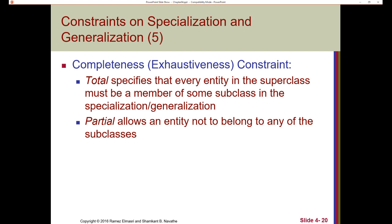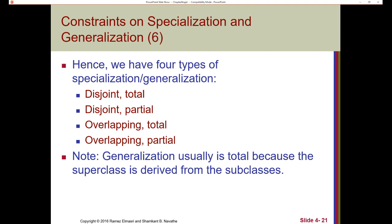Total specifies that every entity in the superclass must be a member of some subclass in the specialization or generalization — each employee has got to also be a member of some subclass: a technician, a secretary, or an engineer. If that's not the case, then we call it partial — an entity might just be an employee in general and doesn't have to necessarily belong to any of the particular subclasses. So in total, we can have four different types of specialization or generalization. First, disjoint and total — for example, employees where each must belong to hourly or salaried, but can't be both.